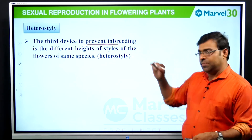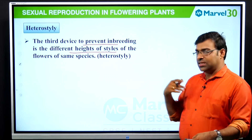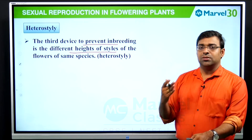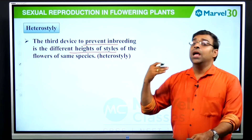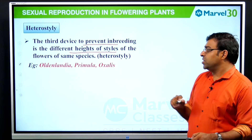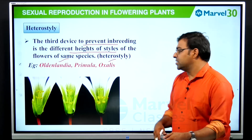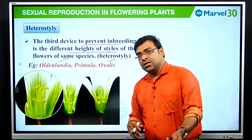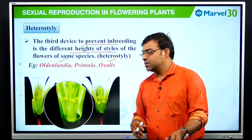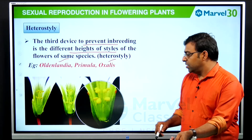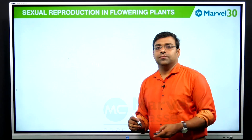Heterostyly is the third device to prevent inbreeding depression. 'Hetero' means different, 'styly' refers to the style. In heterostyly, there are different heights of the styles of flowers of the same species. Examples include Oxalis, Primula, and Lythrum. As seen in the diagram, the stigma is at various heights in different flowers of the same species.